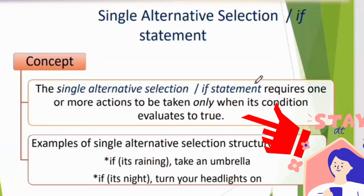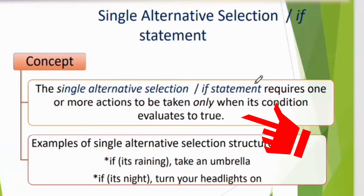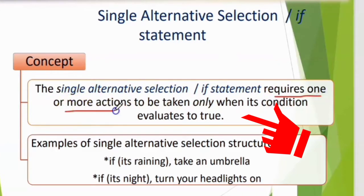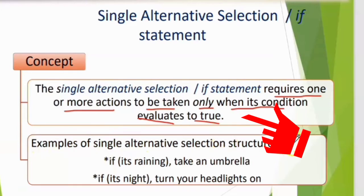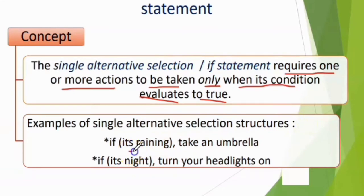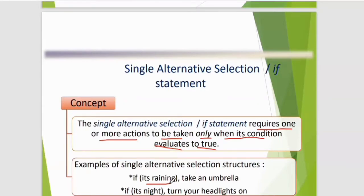The concept of single alternative selection, also known as the if statement, requires one or more actions to be taken only when its condition evaluates to true. If the condition is true, perform the action. For example: if it's rainy, take an umbrella. If it's night, turn your headlights on. If not, do nothing.